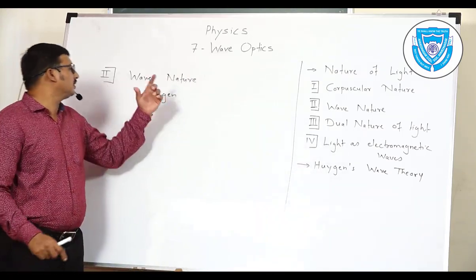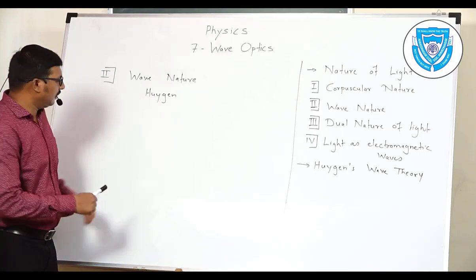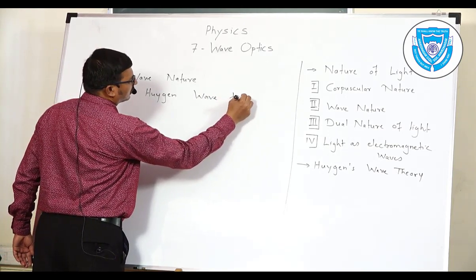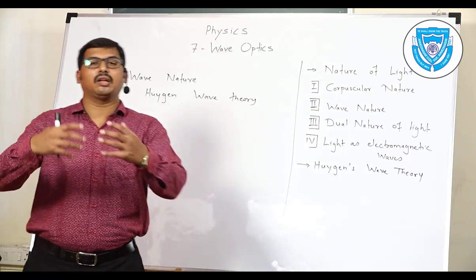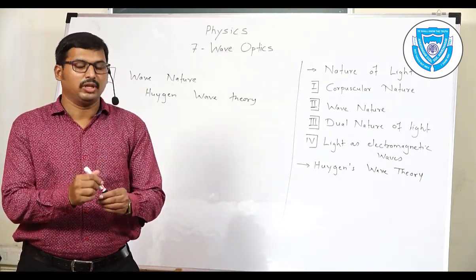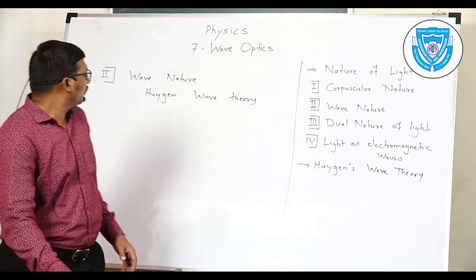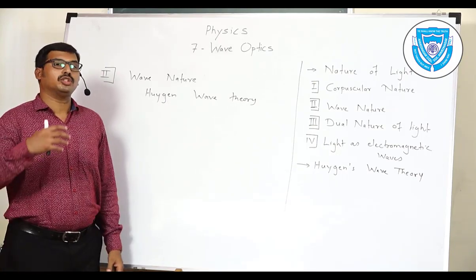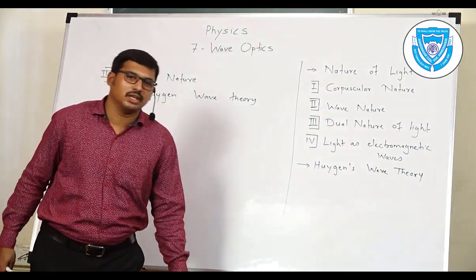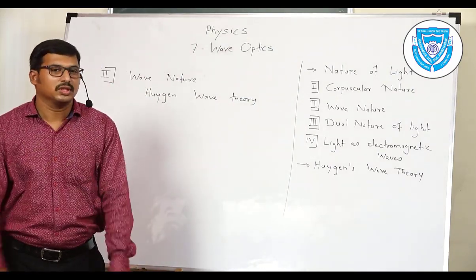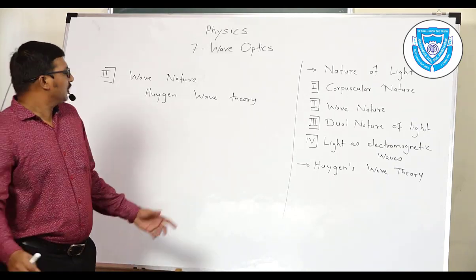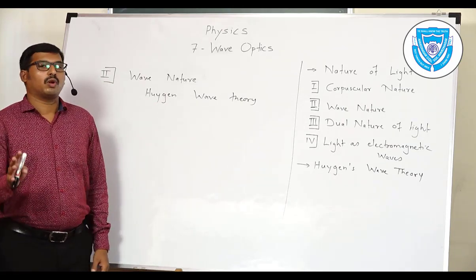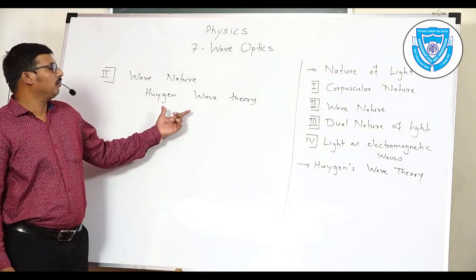The very first point in Huygens' wave theory is that light propagates in the form of waves — specifically, mechanical waves — which always require a material medium for propagation. Initially, Huygens assumed that light propagates in the form of longitudinal waves. We know that longitudinal waves always require a material medium for propagation, for example, sound waves. Similarly, Huygens assumed that light travels in the form of longitudinal waves, which require a material medium for propagation.